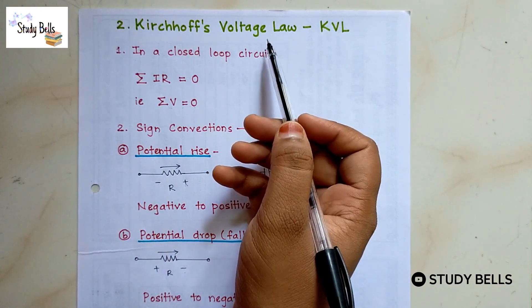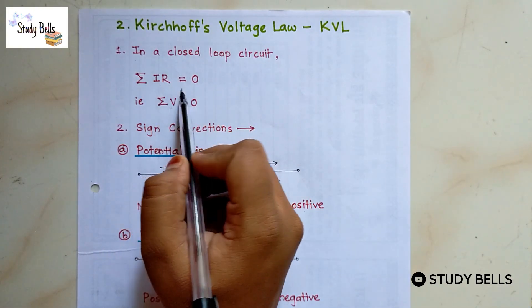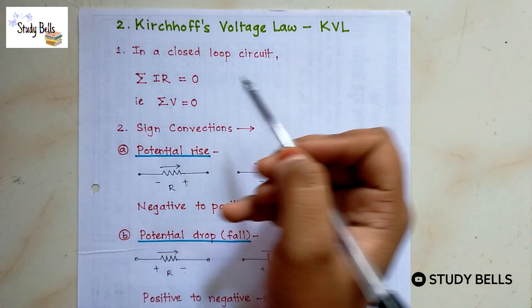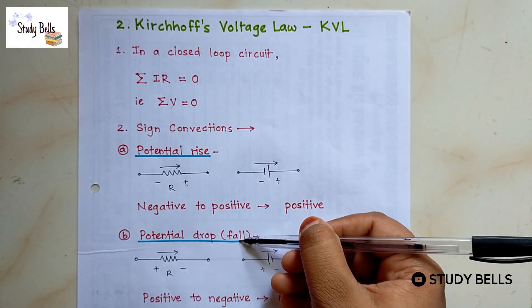Kirchhoff's voltage law. In a closed loop circuit summation of IR equals 0. That is summation of voltage equals 0. There are some sign conventions. Potential rise, potential drop.